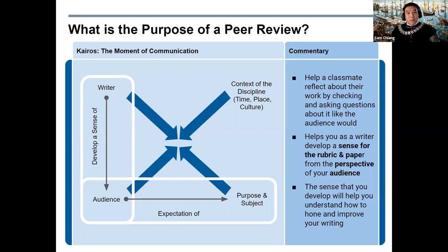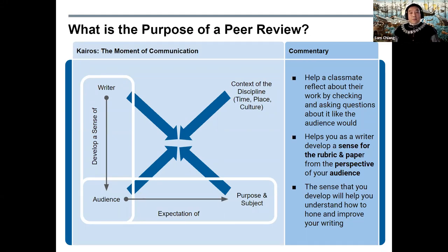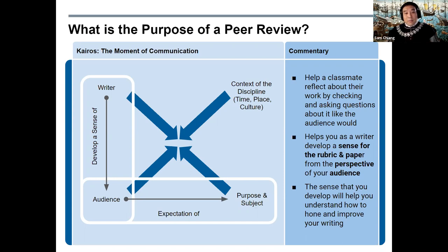This is necessarily difficult. The writer has to reflect about their work and imagine the questions and needs that the audience may have, so they could preemptively answer and address them in the paper. An effective peer review allows another person to simulate the audience and help ask the missing questions that the writer may have skipped, insufficiently addressed, or not imagined. The purpose of a peer review is also to help you as a writer develop a sense for the rubric and paper from the perspective of your audience, which will help you hone and improve your own writing and reflection.